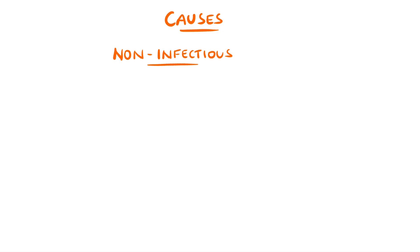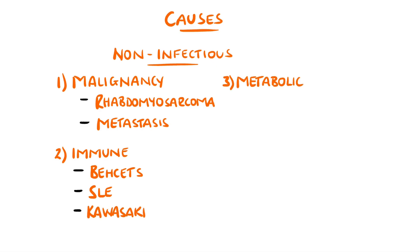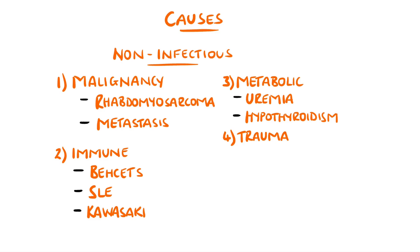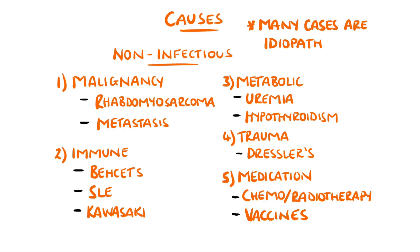Non-infectious causes include malignancy, which may be primary like a cardiac rhabdomyosarcoma or metastatic. Immune conditions like Behçet's disease, lupus, or Kawasaki disease are also included, as well as metabolic causes like uremia and hypothyroidism. Trauma can be a cause of delayed pericarditis, and Dressler's syndrome can occur following a myocardial infarction, where anti-myocardial antibodies are thought to form. Medications may also have a link, including post-radio or chemotherapy and vaccines, with documented cases linked to the smallpox vaccine and some COVID vaccines. However, in many instances the cause is not known — this is termed idiopathic.